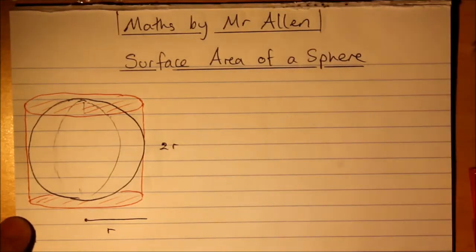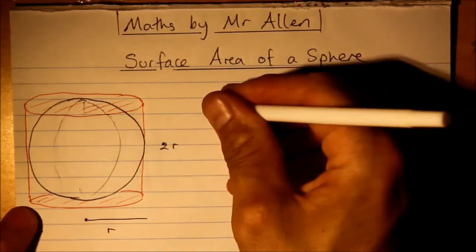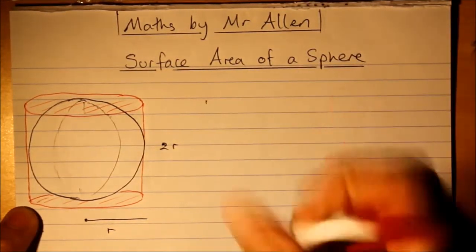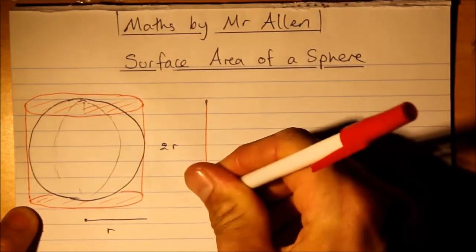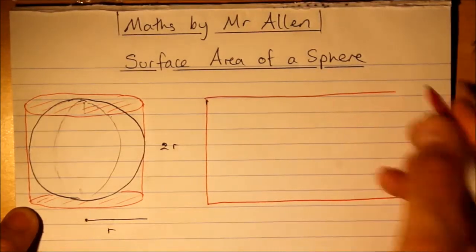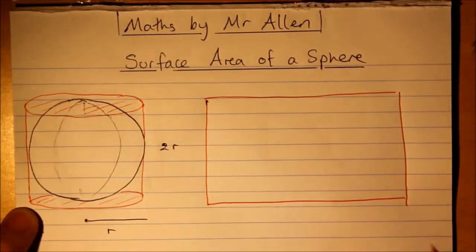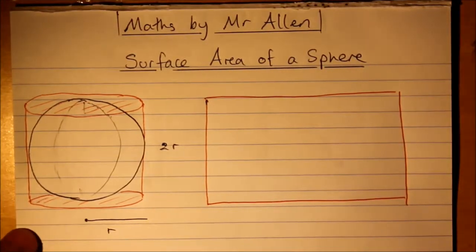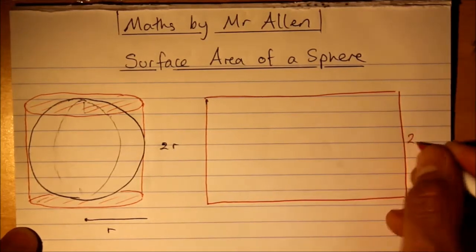Now if we're looking at the net of this, we'll draw a red pen. Alright, so that makes this dimension 2r.